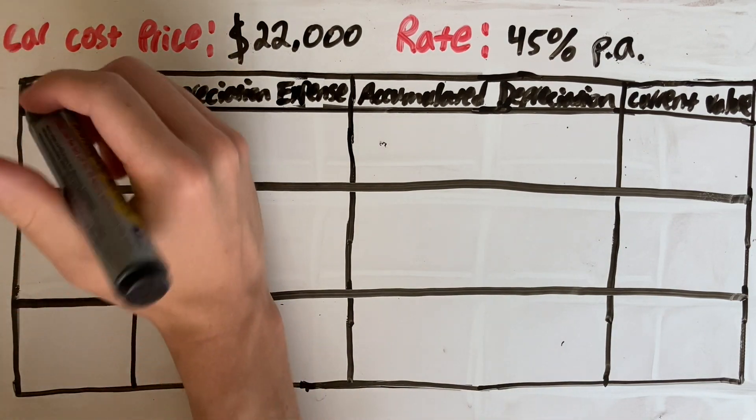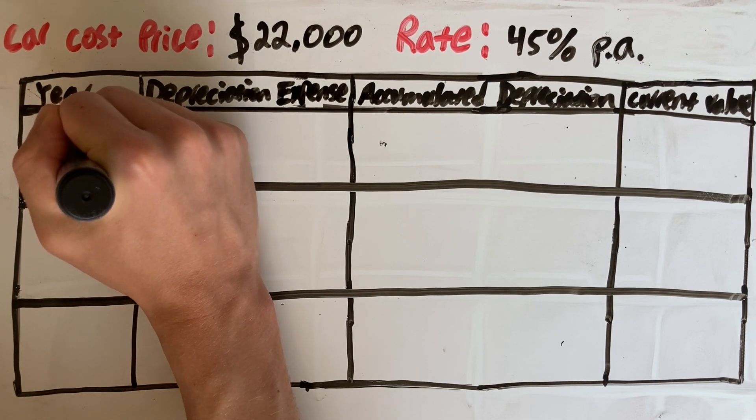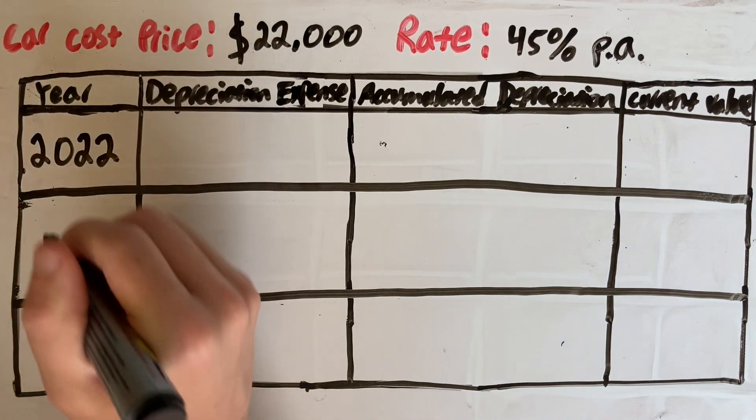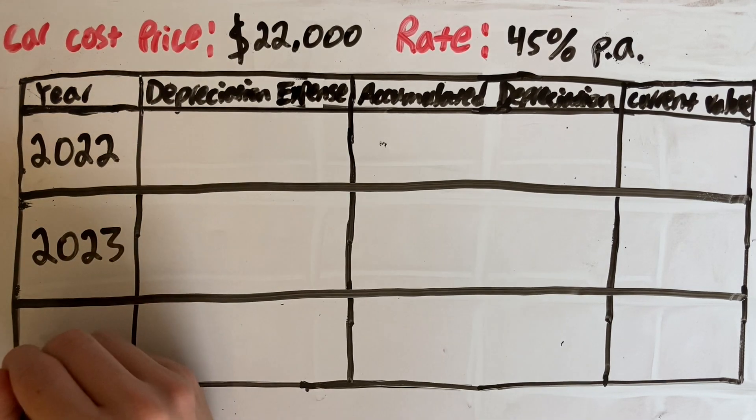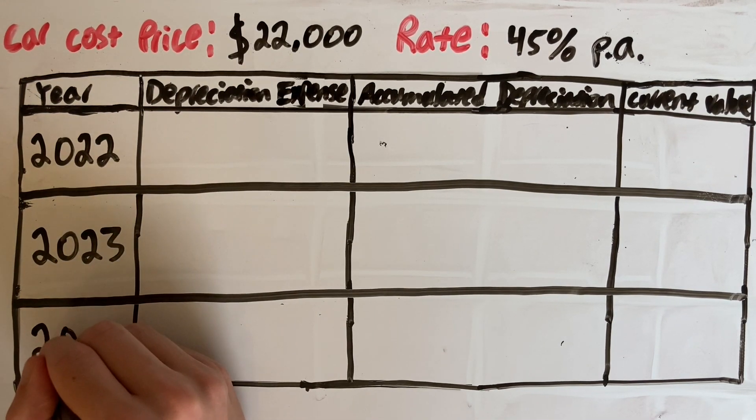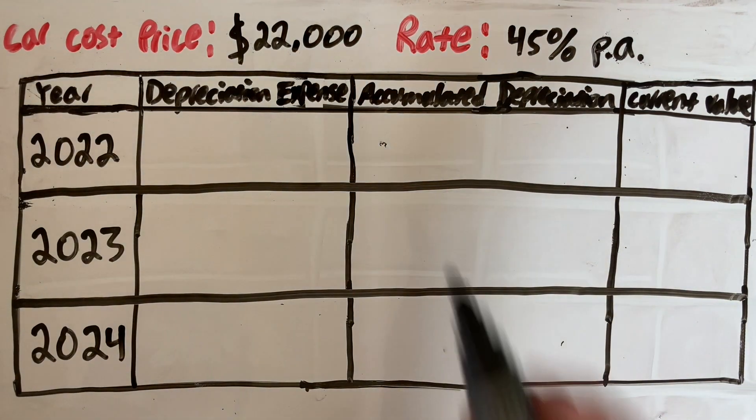We do this year by year. The reducing balance method is different from other methods such as straight line depreciation as the same amount of depreciation is occurring each year. 45% is being depreciated but since the current value changes each year, each year that depreciation will be different.